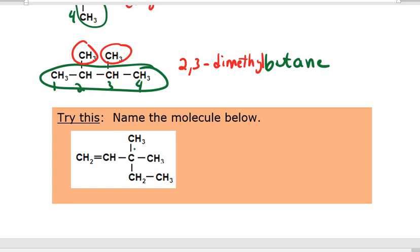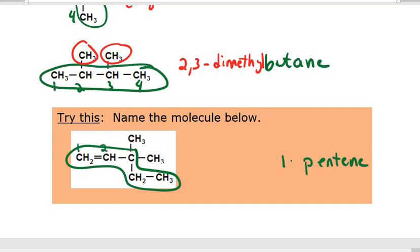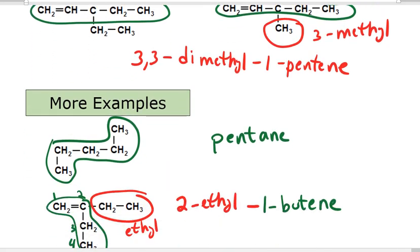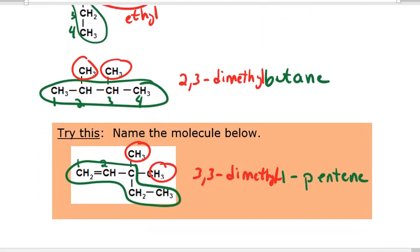The longest chain containing the functional group is five carbons, so that's a pentene. The double bond is between carbons one and two, so it's 1-pentene. Then we have two methyl groups, both at carbon three. So it's 3,3-dimethyl-1-pentene, which is exactly the same molecule we did earlier, just drawn differently.